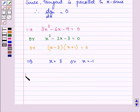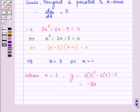Now let's find out the value of y when x is equal to 3. So the value of y when x is equal to 3 is 3 into 3 square minus 6 into 3 minus 9 which on solving gives us the answer as minus 20.